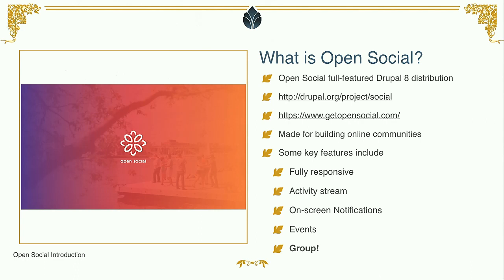So let's have a look at OpenSocial. What is OpenSocial? It's a full-featured Drupal 8 distribution. You can find the project page at drupal.org/project/social or at GetOpenSocial.com. Why did we build it? We built it to make online communities — that's what it's primarily built for. Some key features: it's fully responsive when you install it, it has an activity stream, on-screen notifications, events, and of course the group module.